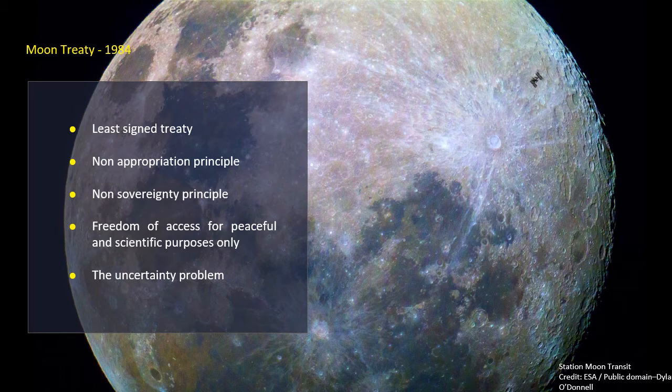Although the Moon Agreement establishes a legal framework for national states concerning the recovery and use of space resources, it has only been ratified by 18 countries, including just 17 of the 95 member states of the UN Committee on the Peaceful Uses of Outer Space. This brings us to the uncertainty problem regarding the right to recover and use space resources.